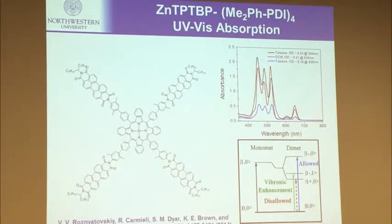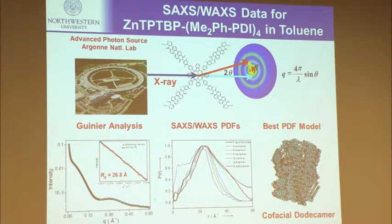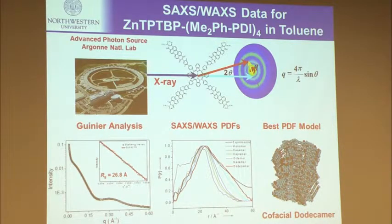This tells us molecules are stacking, but doesn't tell us about structure. That's where we go to the APS for scattering work. At a high-brightness synchrotron source, you get the signal-to-noise needed to subtract solvent contribution to the scattering. In the small-angle regime, a Guinier analysis gives us a radius of gyration of about 27 Ångstroms — a pretty big object. From the wide-angle regime, we can model using PDF analysis, and what best models the system is a dodecamer — primarily a dodecamer in the distribution, though it's in equilibrium with other structures.